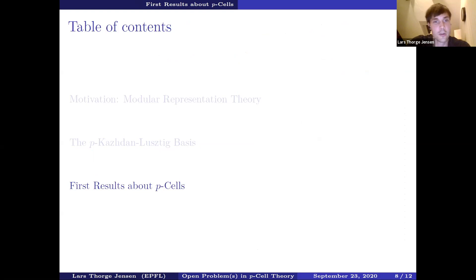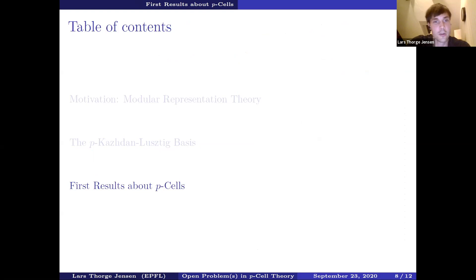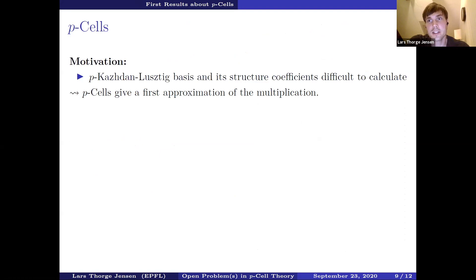Now let me come to the last part of my talk, in which I mention some results about p-cells. First of all, what are actually cells and why does one study them? As I said, the p-Kazhdan-Lusztig basis is pretty difficult to calculate. And also its structure coefficients are pretty mysterious because in principle, the structure coefficients are related to tensor product multiplicities of tilting modules. It's difficult to calculate, but p-cells give some sort of first approximation of the multiplication. That's a motivation to study them.